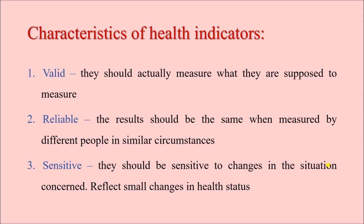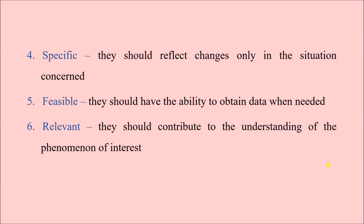Sensitivity means the indicator should be sensitive to changes in the situation concerned. If there is any minor change — for example, a sudden increase in the number of maternal deaths in a population — the indicator should be sensitive enough to detect that small change. Specificity means the indicator should reflect only the situation concerned. For example, maternal mortality ratio should reflect changes in maternal deaths only — if there is a change in infant deaths, that should not be reflected by the maternal mortality ratio indicator.